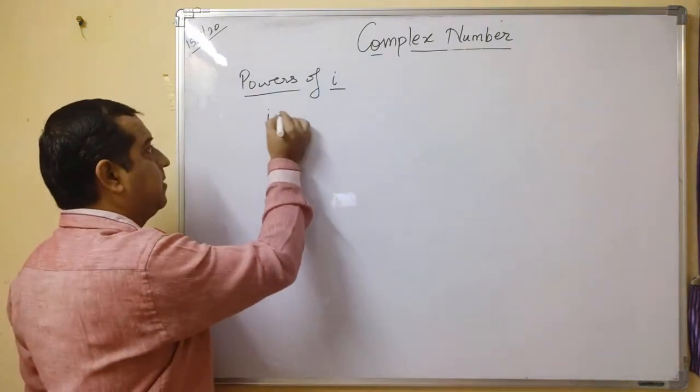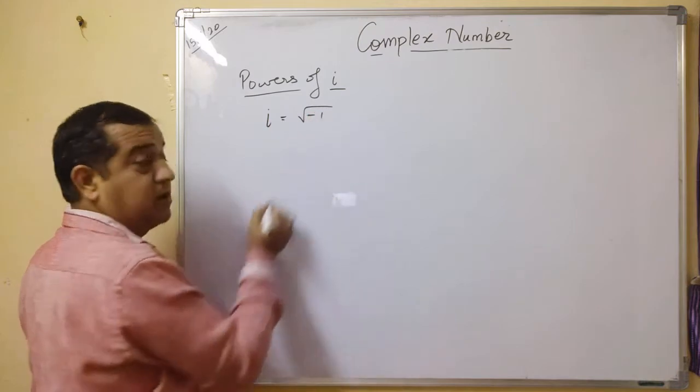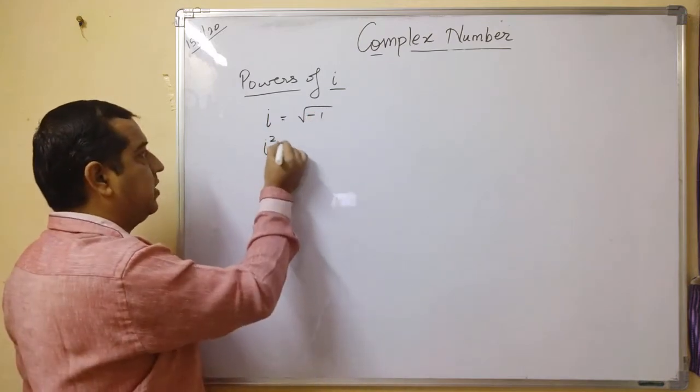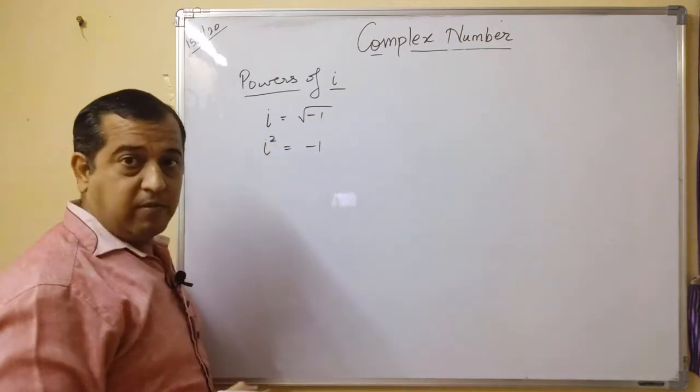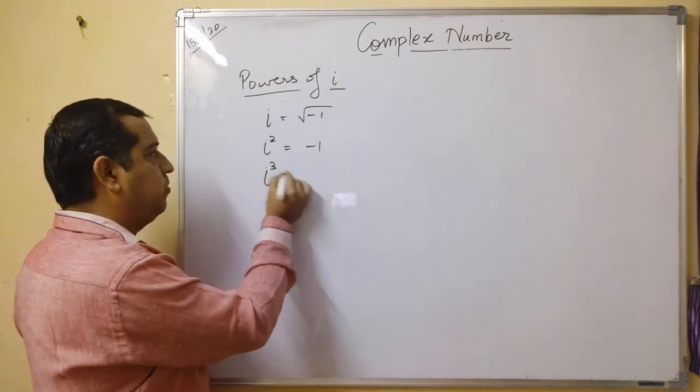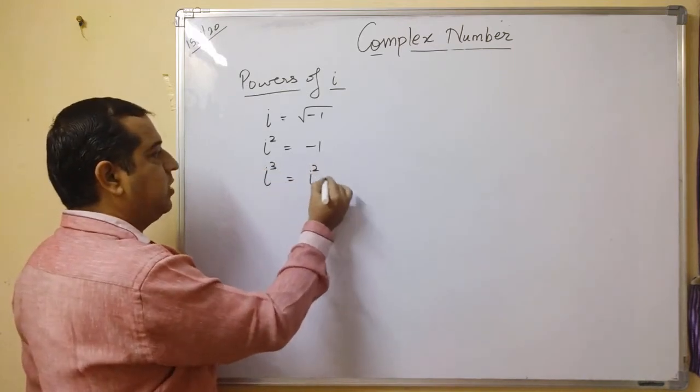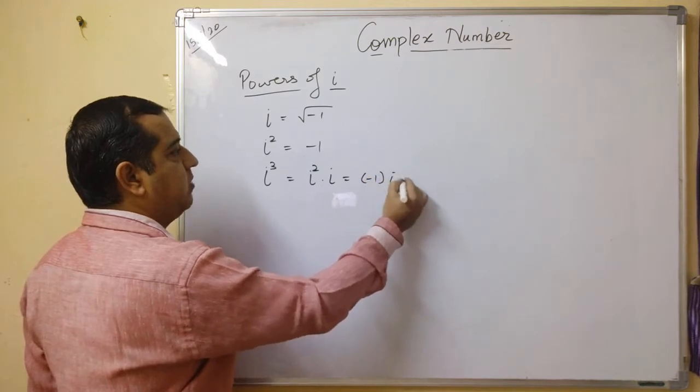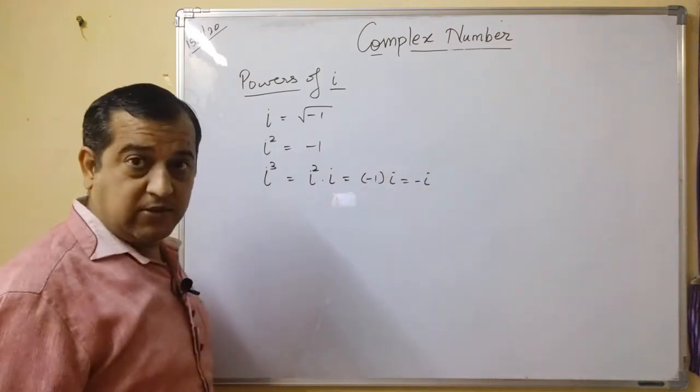Now see, what is i? It is the square root of minus 1. So what will be i²? i² will be -1. If you come to i³, it will be i² times i. i² which is -1 times i equals -i.